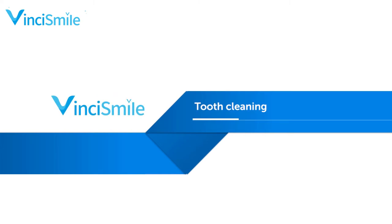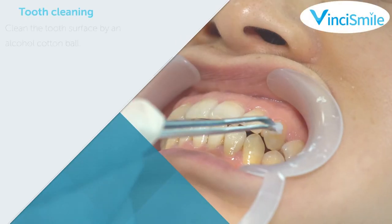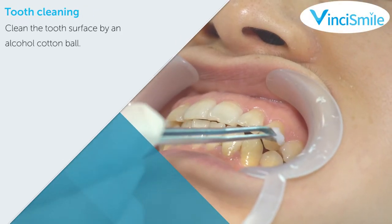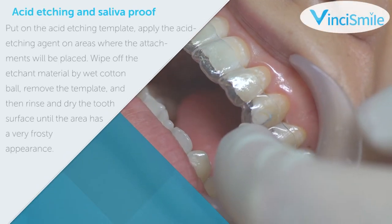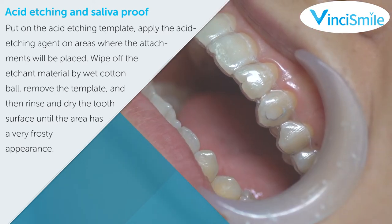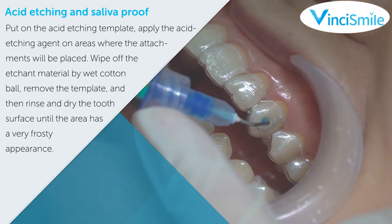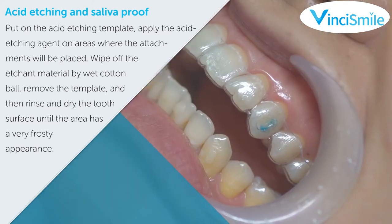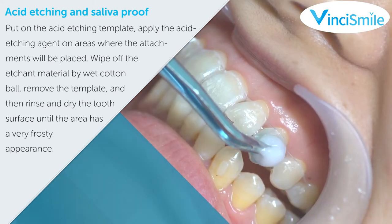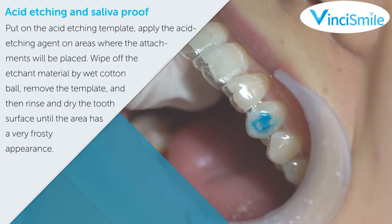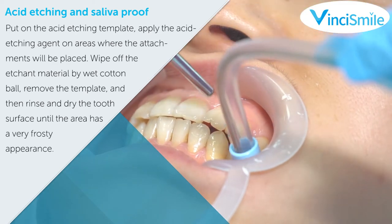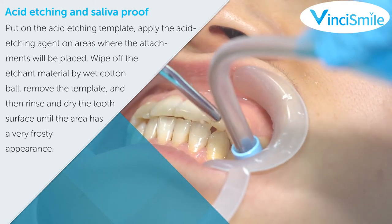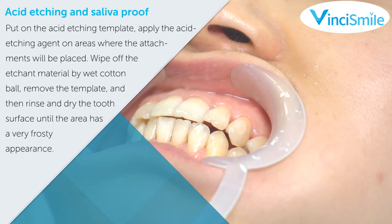Tooth cleaning: clean the tooth surface with an alcohol wipe. Exit etching and saliva-proof step: put on the acid etching template, apply the acid etching agent on the areas where the attachments will be placed, wipe off the etching material with a wet cotton roll, remove the template, then rinse and dry the tooth surface.